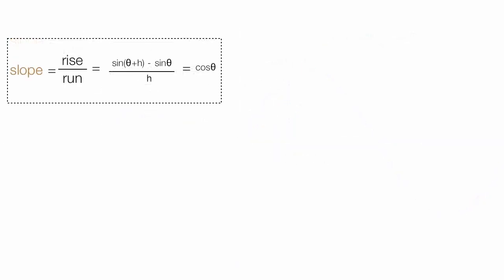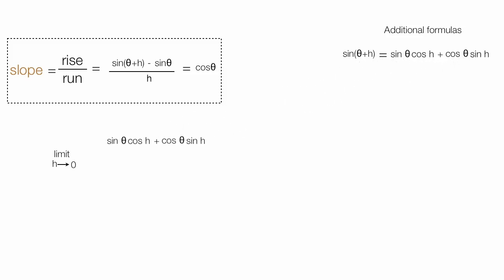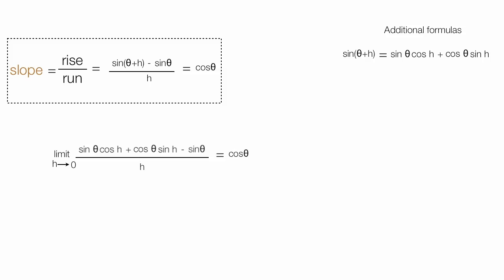Don't run away — I'm going to show you a few things before I get to the visual explanation. Sine theta plus h is equal to sine theta cosine h plus cosine theta sine h. You probably don't know that off the top of your head, but you're learning it now. So if I take the limit as h approaches 0, and I plug in this new equation for sine theta plus h, I get all of this minus sine theta divided by h, and this is equal to cosine theta.